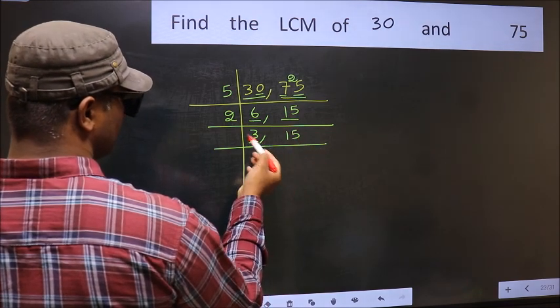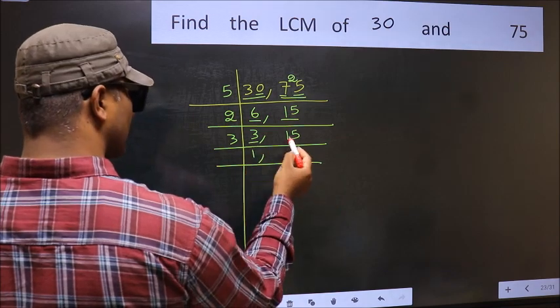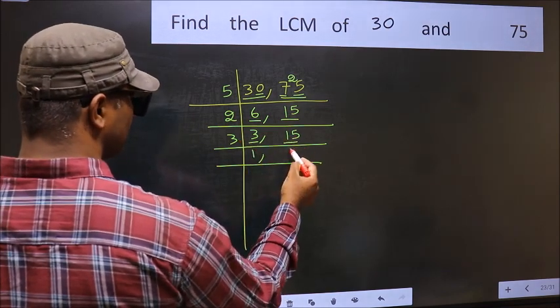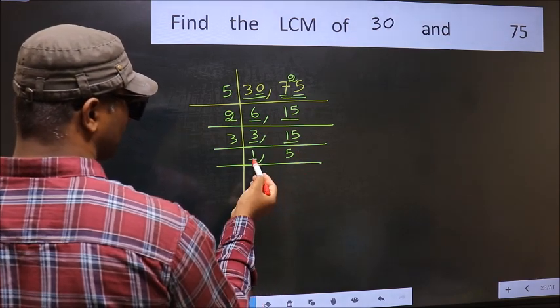Now here we have 3. 3 is a prime number, so 3 divided by 3 is 1. The other number 15, when do we get 15 in 3 table? 3 times 5 is 15. Now we got 1 here.